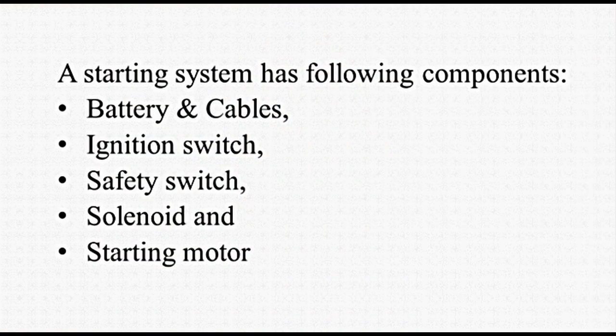A starting system has the following components: battery and cables, ignition switch, safety switch, solenoid, and starting motor. Battery and cables: it is generally a lead-acid battery that provides current to the starter motor and acts as a reservoir of electrical energy, fulfilling additional current requirements as needed. Cables are multi-strand wires capable of carrying 250 amperes or more. Battery terminals are used to connect the battery, and these and cable joints must be kept clean for proper functioning.